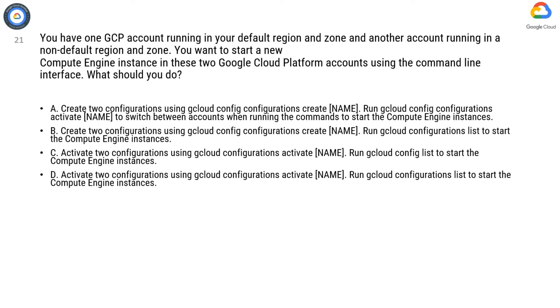Option D. Activate two configurations using gcloud configurations activate name. Run gcloud configurations list to start the Compute Engine instances.